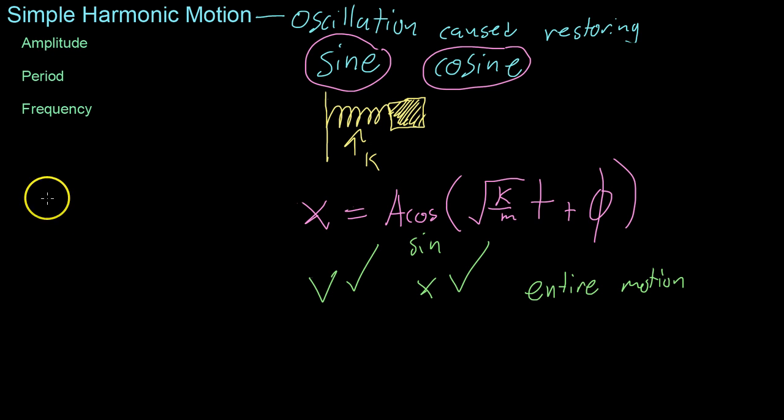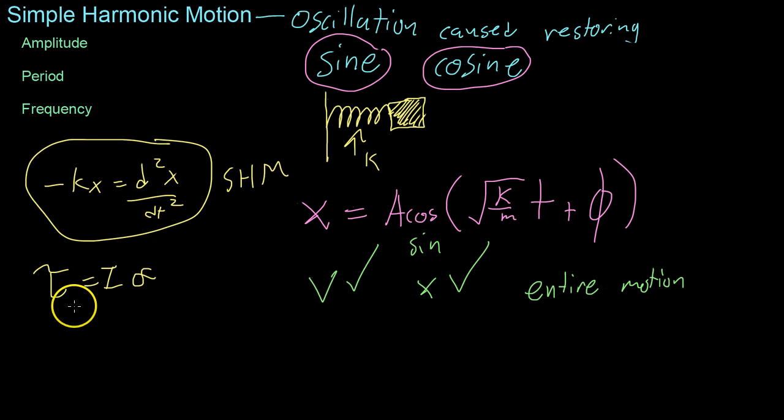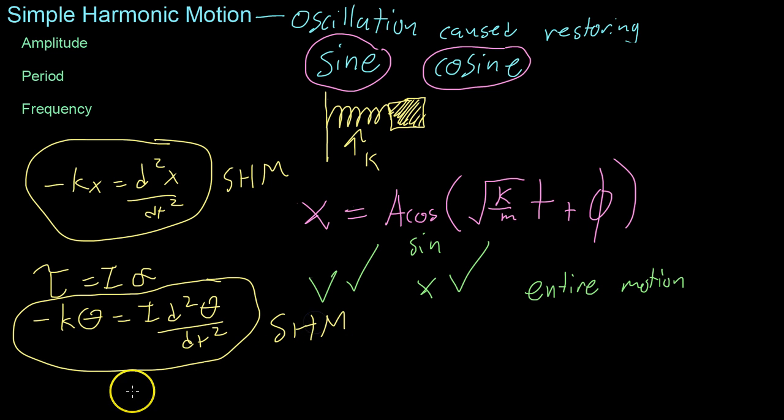It should also be noted that all motion that follows this negative kx equals d²x/dt² form is simple harmonic motion. So, for example, if we transform this into a rotational analog, let's say torque equals I times alpha, or negative k theta equals I d²theta/dt², it's the same form, therefore it's also simple harmonic motion, just rotationally.